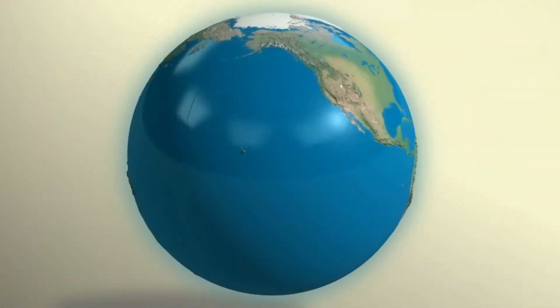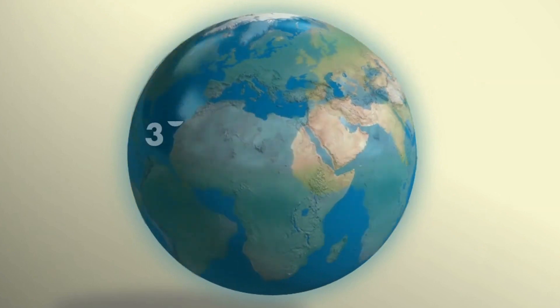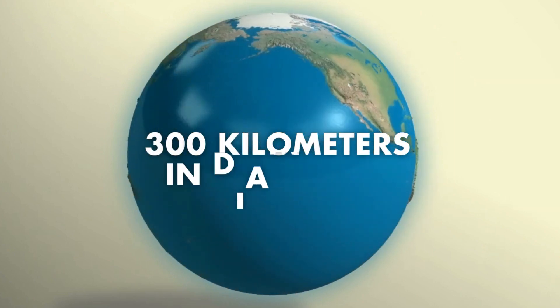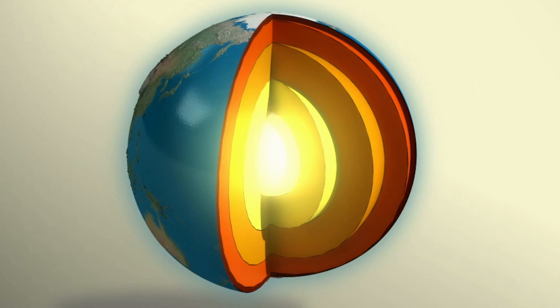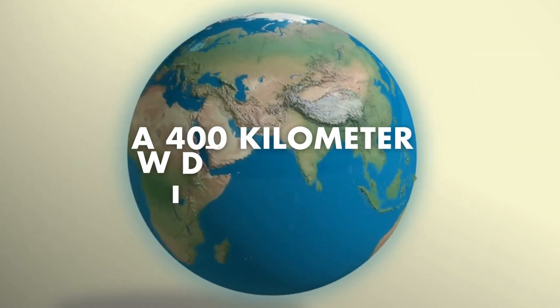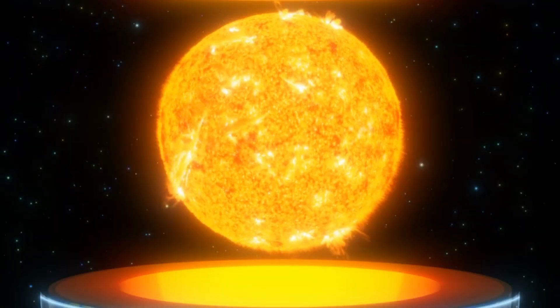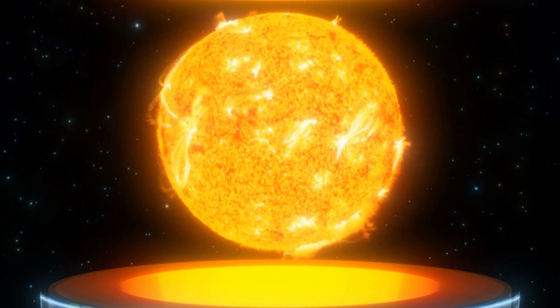20 years ago, scientists stumbled upon an enigmatic phenomenon hidden within the depths of our planet's core. It suggested a mysterious structure, potentially measuring 300 kilometers in diameter, that puzzled researchers for years. Further analysis pointed to a possibility of a 400-kilometer-wide structure that could change the way we see our planet's inner workings.